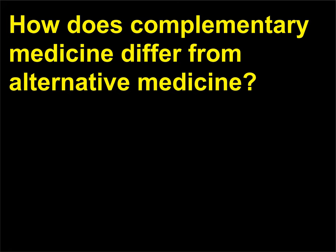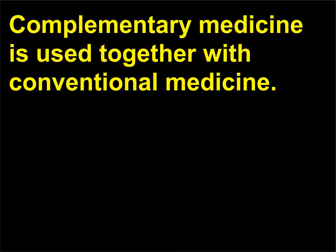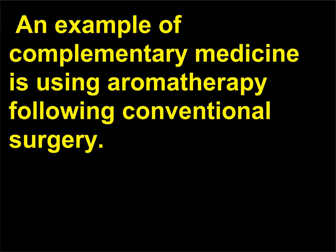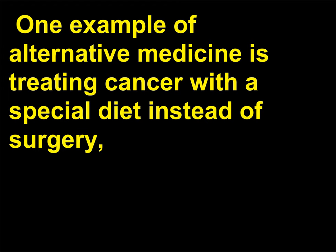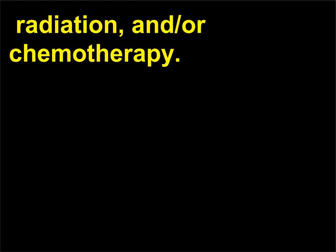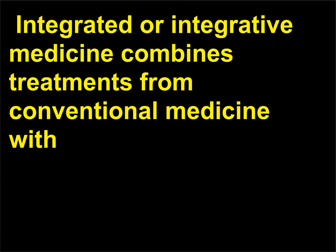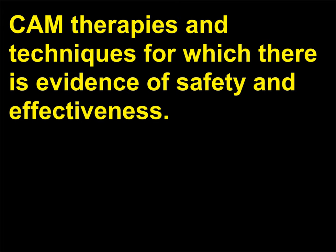How does complementary medicine differ from alternative medicine? Complementary medicine is used together with conventional medicine. An example is using aromatherapy following conventional surgery. Alternative medicine is used in place of conventional medicine — one example is treating cancer with a special diet instead of surgery, radiation, and/or chemotherapy. Integrated or integrative medicine combines treatments from conventional medicine with complementary therapies and techniques for which there is evidence of safety and effectiveness.